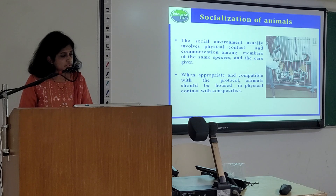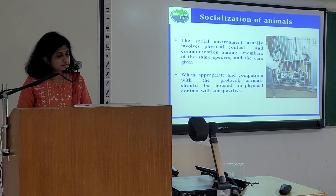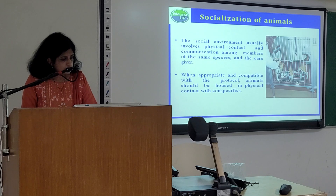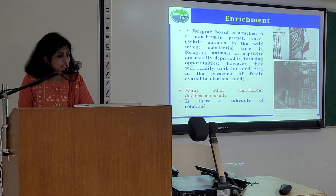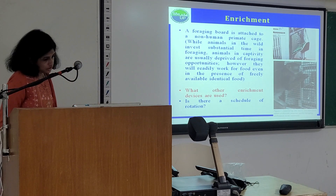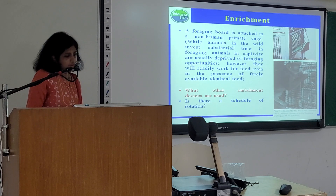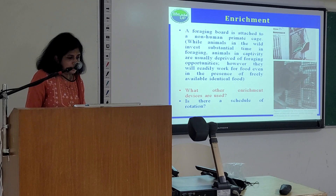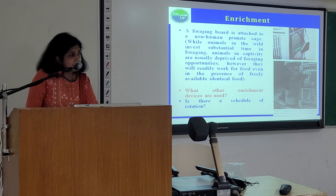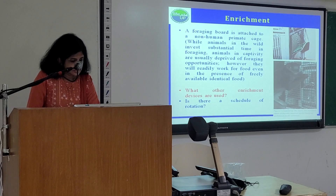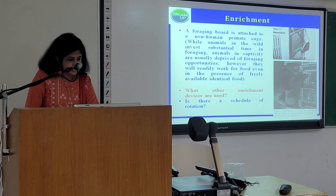Socialization of animals is very important. The social environment usually involves physical contact and communication among members of the same species and the caregiver. When appropriate and compatible with the protocol, animals should be housed in physical contact with conspecifics. Environmental enrichment is also a very important element. A foraging board is attached to a non-human primate cage — while animals in the wild invest substantial time in foraging for food, animals in captivity are usually deprived of foraging opportunities; however, they will readily work for food even in the presence of freely available identical food.